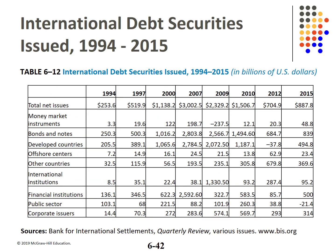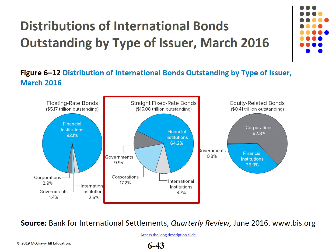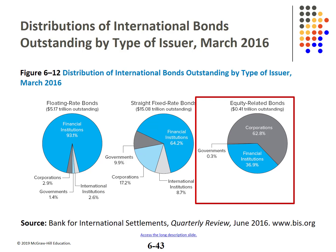This table recaps international debt issues from 1994 to 2015. Totals were rising from 2000 to 2010, when they dropped off significantly. By type of issuer: floating rate bonds are overwhelmingly issued by financial institutions, which also dominate straight fixed rate bonds, but corporations dominate in equity-related bonds. Equity-linked securities resemble both stock and bonds, providing returns tied to some form of underlying equity — normally common stock — meaning returns are linked to the up and down movements of the underlying stock.